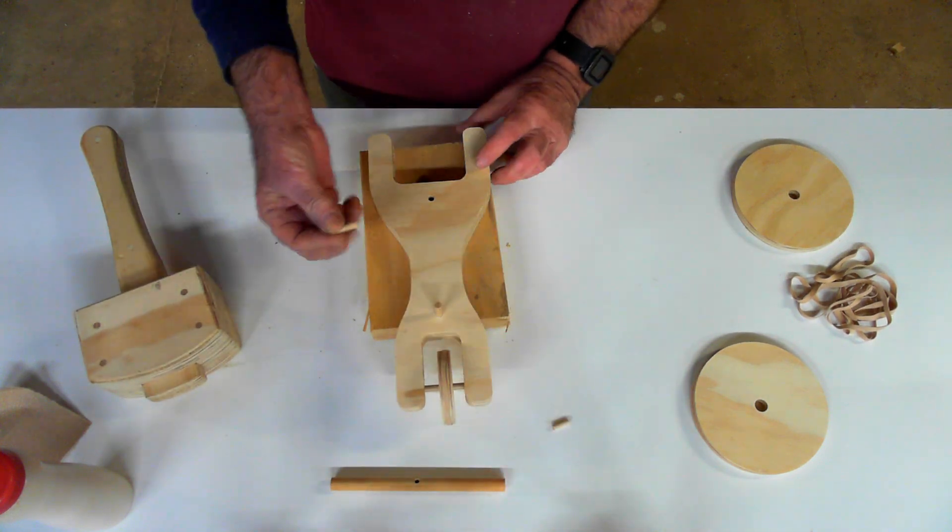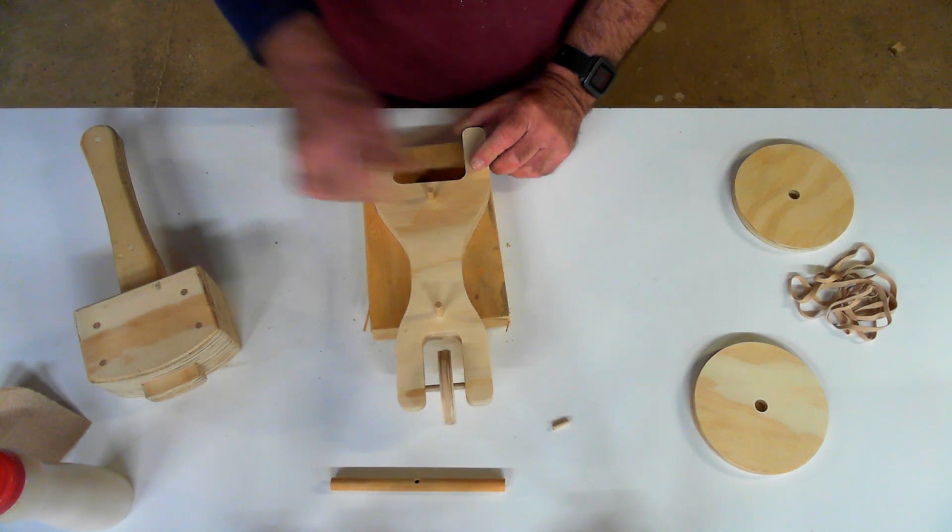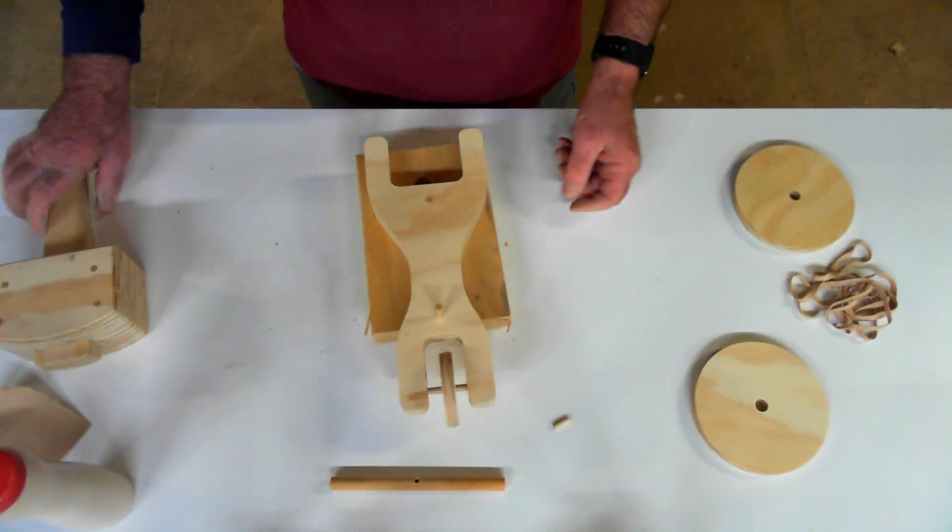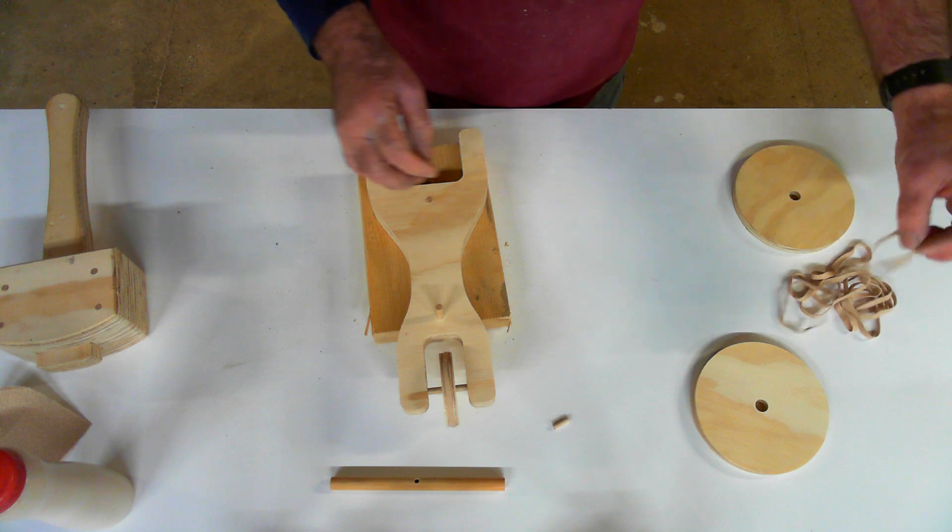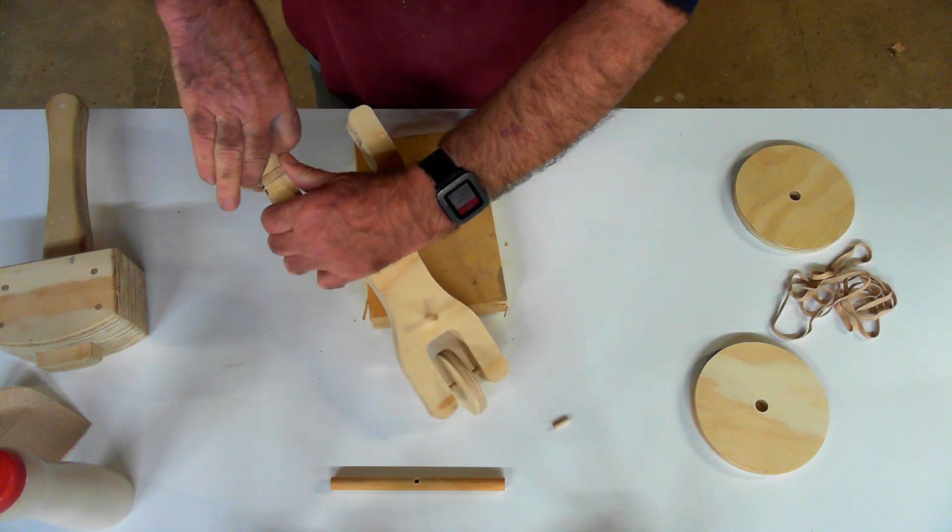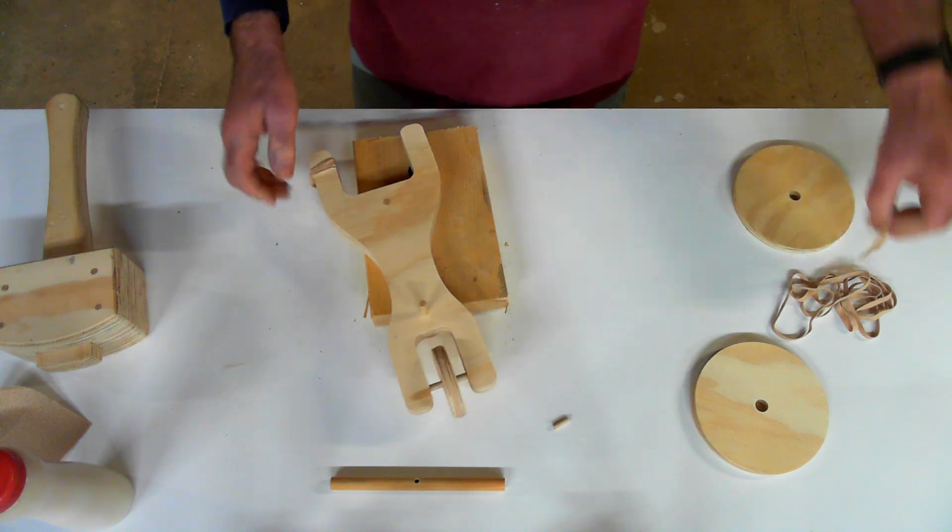The shorter, the last one inch piece of dowel goes in the back here. And that just gets driven to flush. If you glued, if you decided to glue it, then put a handful of rubber bands around just to act as clamps. If you've got clamps, great, put clamps on it. But it may take a lot of them.